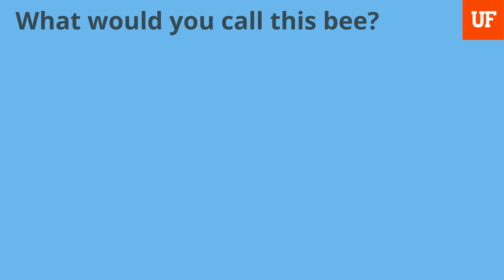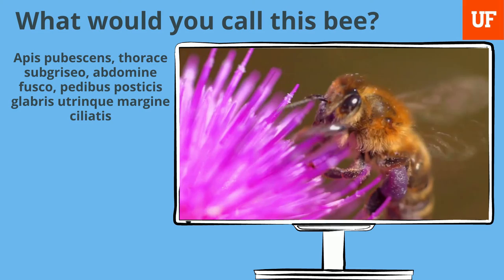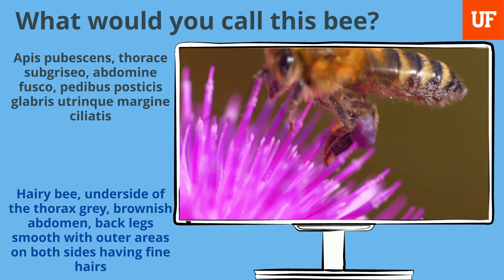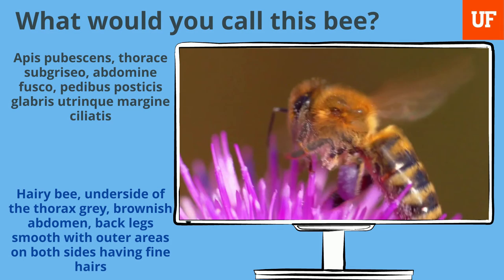Take the name of the European honeybee, for example, which used to be known by a very long Latin phrase — that's a bit of a mouthful — which roughly translates to: hairy bee, underside of the thorax grey, brownish abdomen, back legs smooth, with outer areas on both sides having fine hairs. Back then, names could become polynomial to the point of no return.